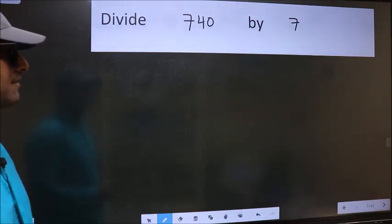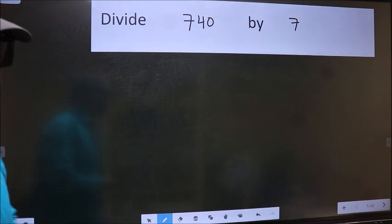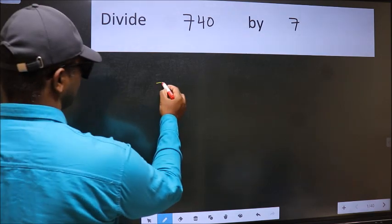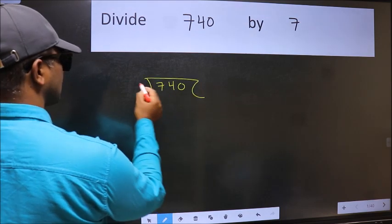Divide 740 by 7. To do this division, we should frame it in this way: 740 here and 7 here.